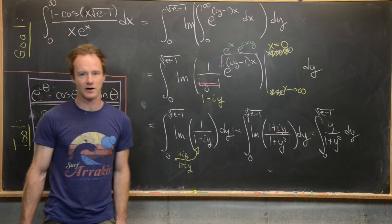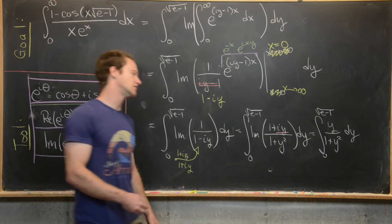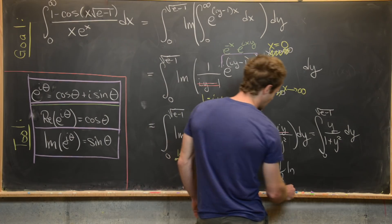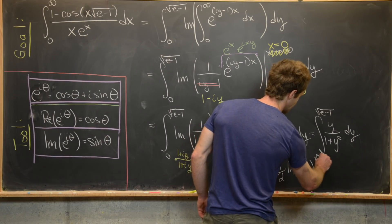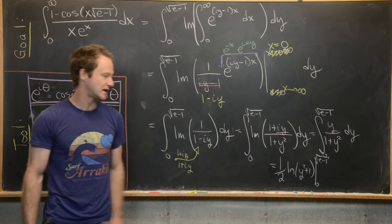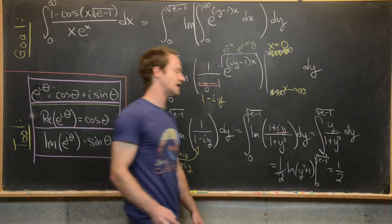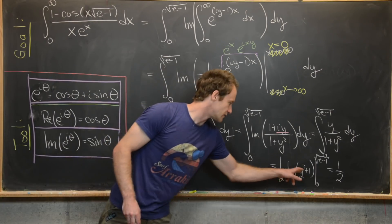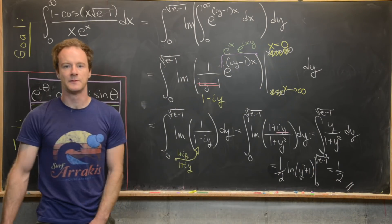That's an integral from the last couple of weeks of a calculus one class — a simple u-substitution. The derivative of the denominator is two y, which is essentially the numerator, so we include a factor of one half. This gives one half times the natural log of y squared plus one, evaluated from zero to the square root of e minus one. Plugging in the upper bound gives e minus one plus one, so we get the natural log of e, which is just one — contributing one half. The lower bound gives natural log of one, which is zero. So our final answer is one half.